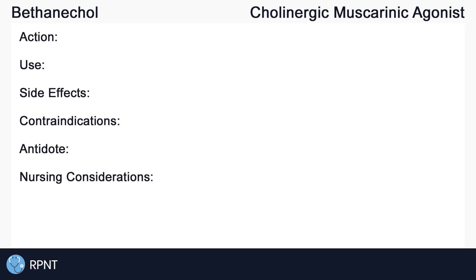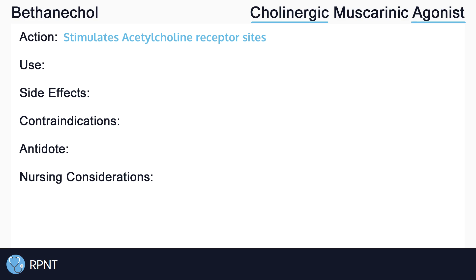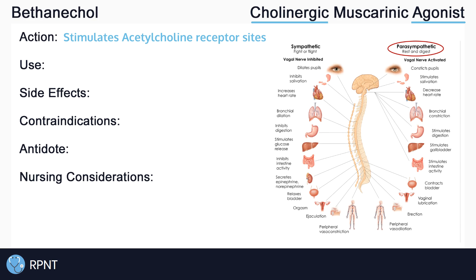Bethanachol belongs to the cholinergic muscarinic agonist drug classification. To get a good understanding of how the drug works, let's break down the words in that classification. Cholinergic agonist means that it stimulates acetylcholine receptor sites. Acetylcholine is the main neurotransmitter involved in our parasympathetic nervous system, which is also known as the rest and digest nervous system.